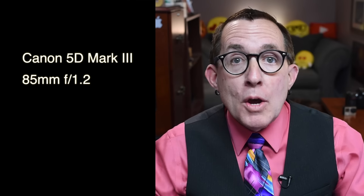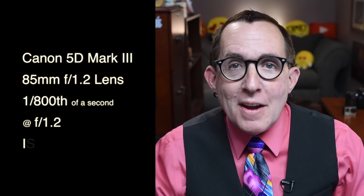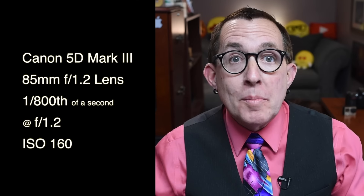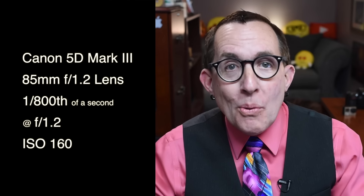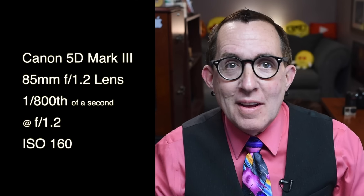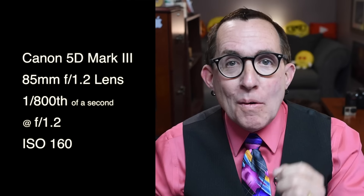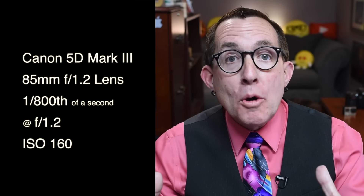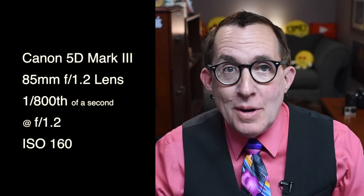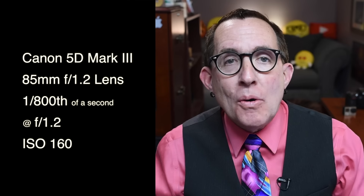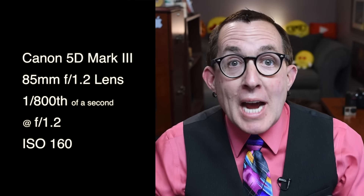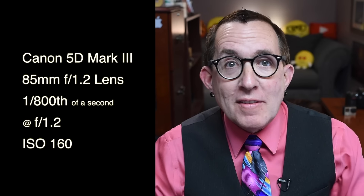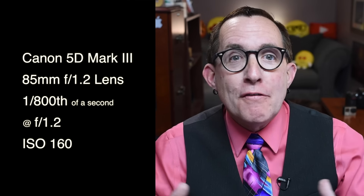Chad also shares the following technical details: the camera was a Canon 5D Mark III with an 85mm f1.2 lens. The shutter speed was 1/8th of a second, shooting at a wide open aperture of f1.2 and ISO 160. Chad did his post processing in Photoshop.